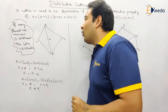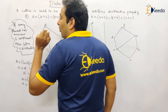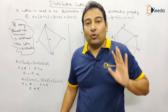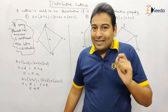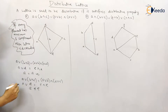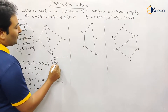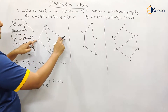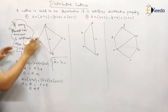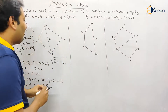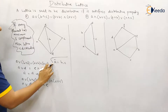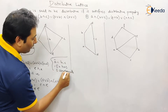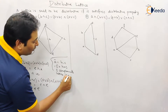I have a trick for you: if every element has at maximum one complement, then the lattice is said to be distributive. Maximum one means one or zero complements. Now if you observe this particular diagram, element a has two complements — b and c — because a join b is e and a meet b is d, and the same is the case with c. Therefore a has two complements, which is against this rule. So since a has two complements, the lattice is not distributive.